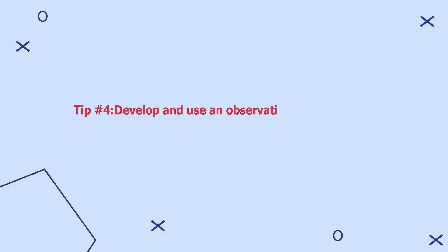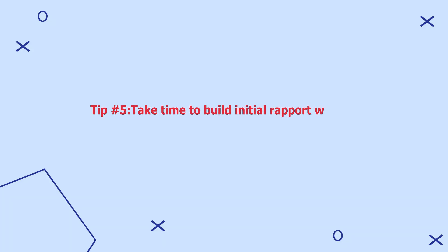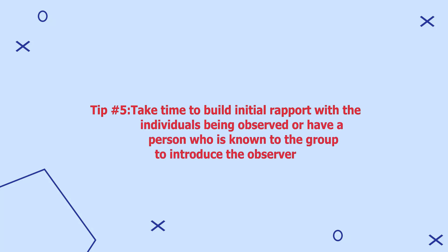Tip number four: develop and use an observation protocol that can be used to record notes in the field. A researcher should ensure that the observation protocol is well marked with the date, place, and type of observation. Tip number five: take time to build rapport with the individuals being observed, or have a person known to the group introduce the observer. An observer can also begin with limited objectives during the first few sessions, focusing on observing more and taking fewer notes initially.